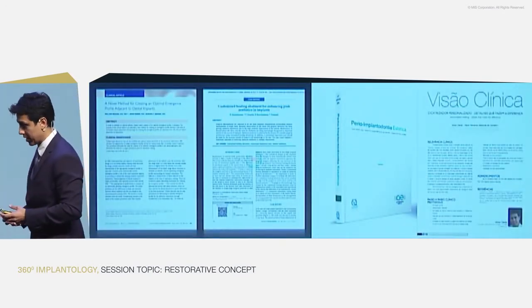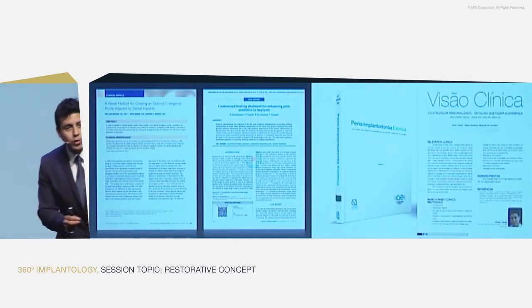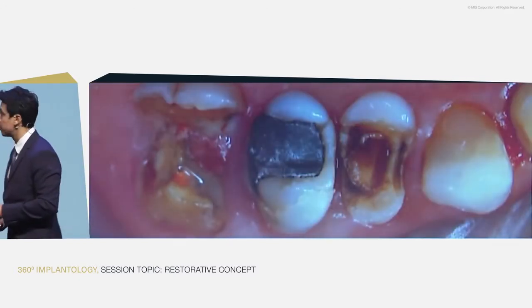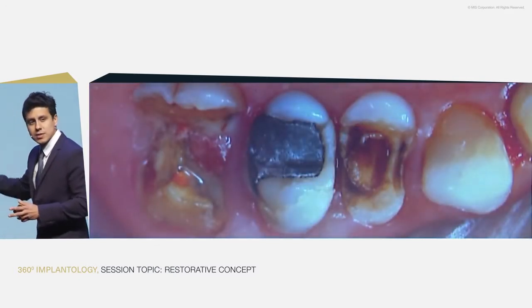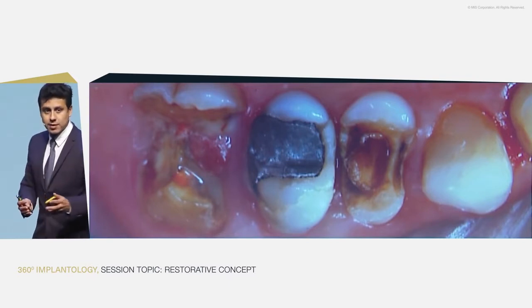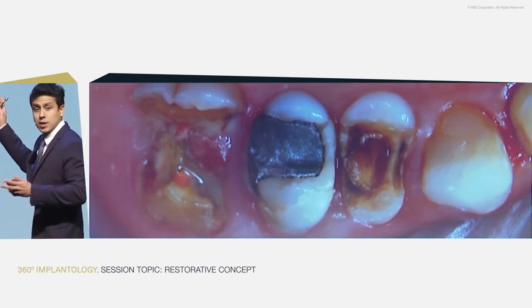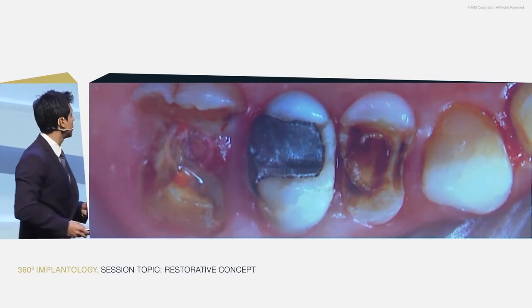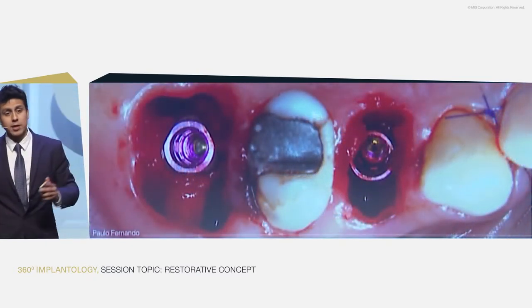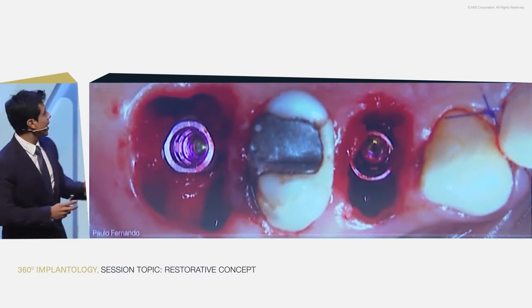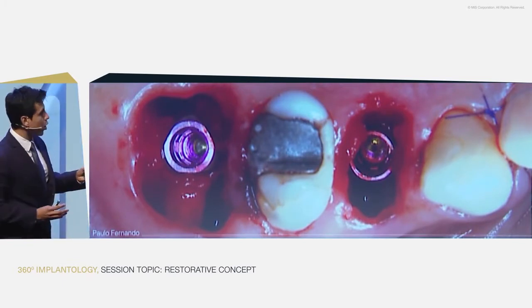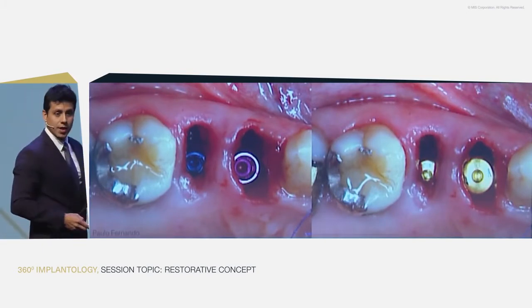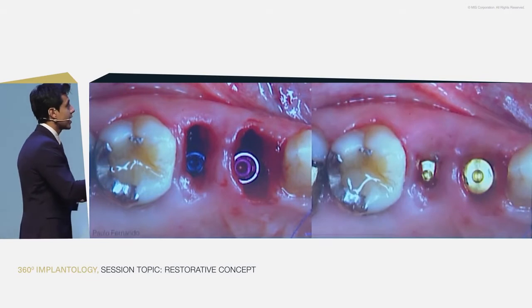If you cannot do immediate loading, you can customize your healing abutments — that is the way we have been working. In this simple case from daily practice, the patient lost a molar and a premolar. We worked with Paulo Fernando from Implant Plareo Brazil. Paulo placed two V3 implants. You can see the implants now in the alveolus. With the normal approach, you place healing abutments and after four months you have flat tissue.